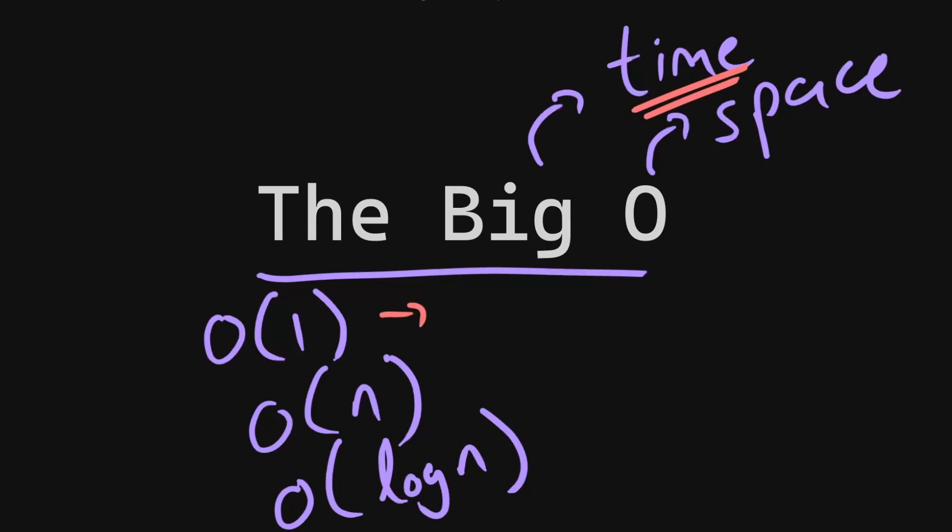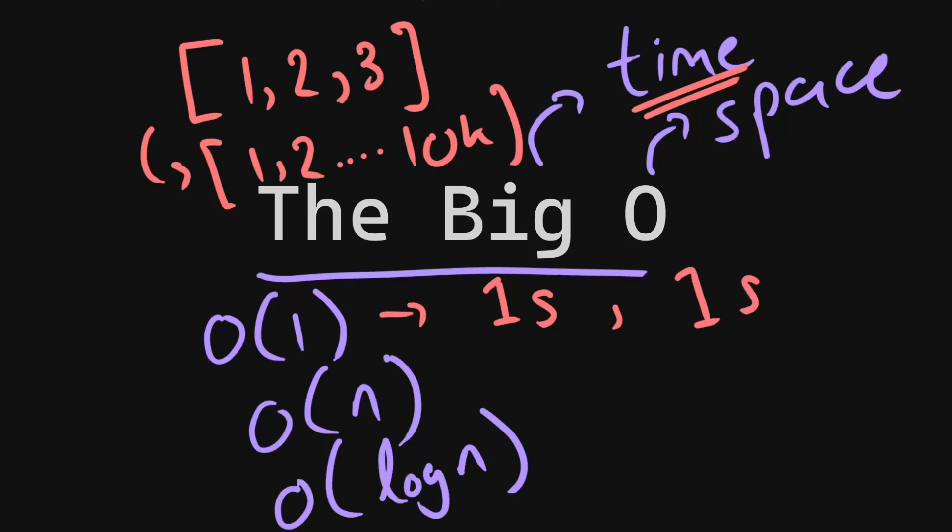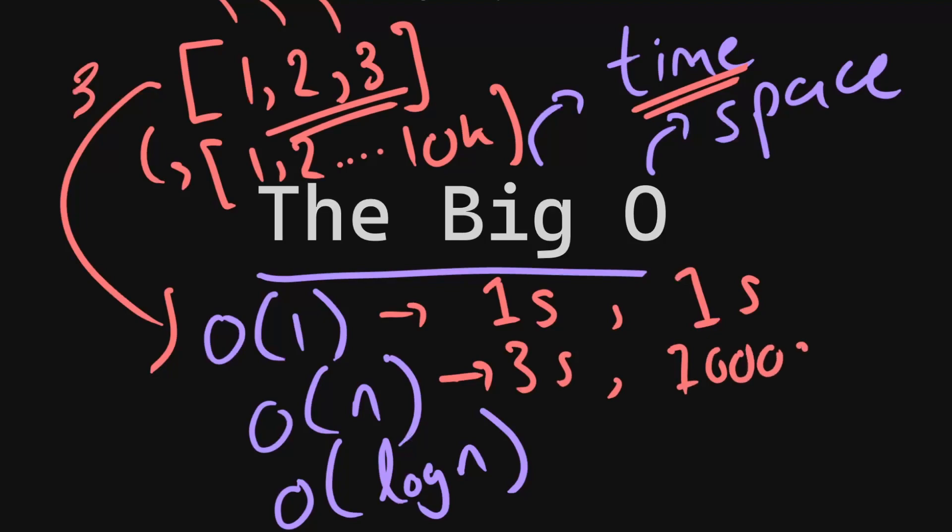So something like O(1) just means given an input array, say 1, 2, 3, let's say this takes 1 second. And then we scale this array to 1, 2, all the way up to 10,000, it should still take 1 second. Whereas something like O(n) scales linearly to the size of the input. What that means is this has 3 elements, let's say it takes 1 second to loop through each element. So this will take 3 seconds with 3 elements, and it should take 10,000 seconds with 10,000 elements.